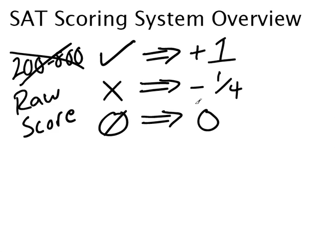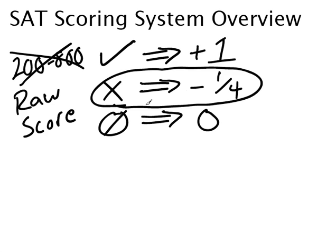The one thing that really confuses students is that if you get a problem wrong, not only do you not get the points, but you actually get a quarter of a point removed from your score. That's kind of strange — you don't really see that happen in school. On a 10-question quiz, your math teacher doesn't dock points. But on the SAT, this is how it works. We're going to talk about why they do this and how, once you understand this system, it will affect whether or not you guess on certain questions. To do that, we need to talk about probability for a second.